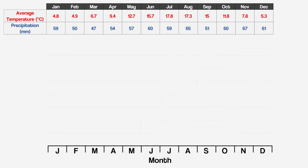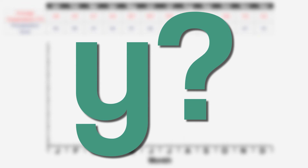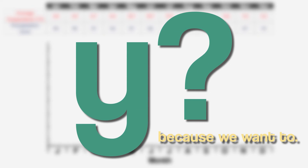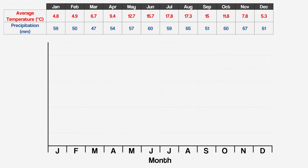Next up we'll add a y-axis. Why? Because we want to. We're going to plot the temperature against this axis. The highest number we have in our data is 17.8 degrees Celsius, so I think the numbers on this axis should go up in fives, up to 20. And again, it's always good to make sure the axis is labelled.